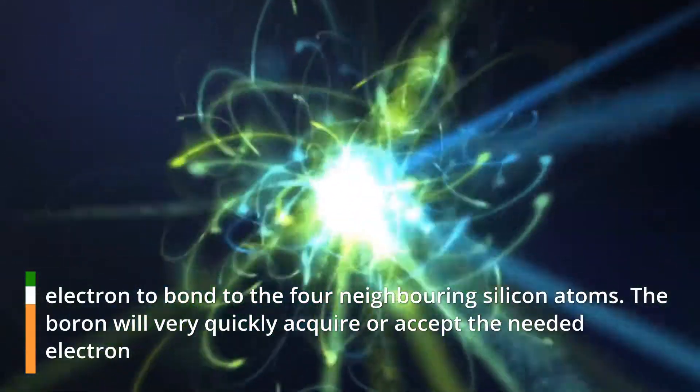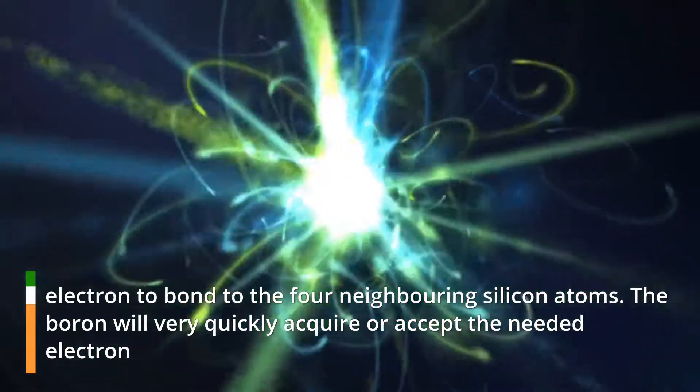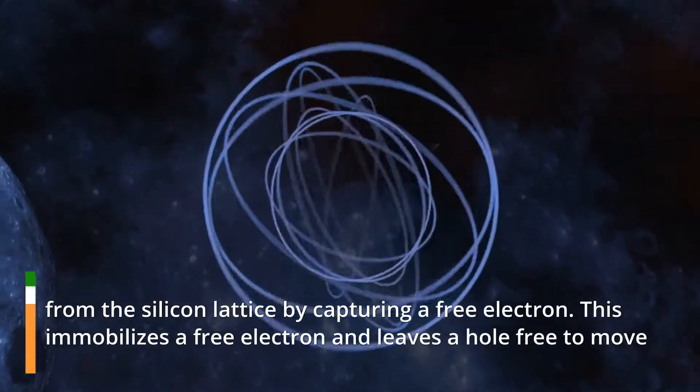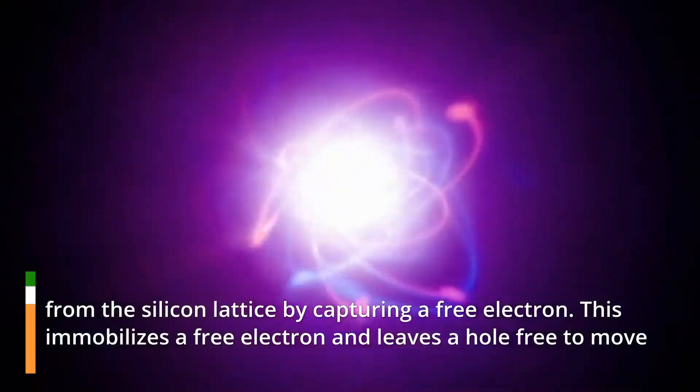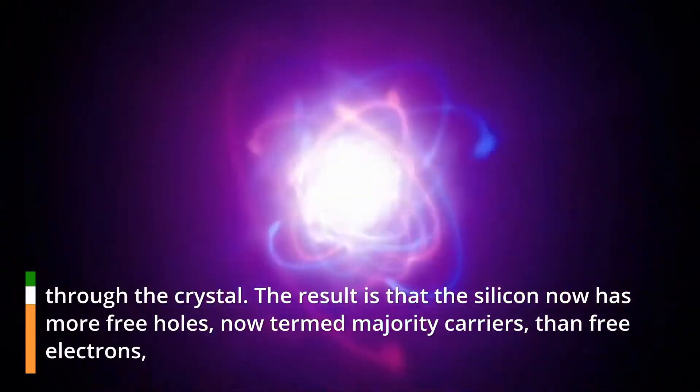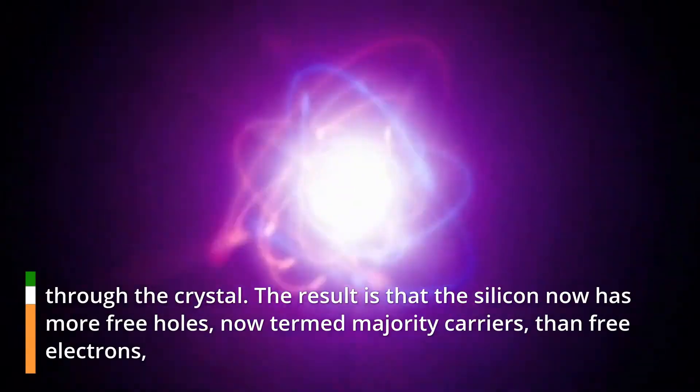The boron will very quickly acquire or accept the needed electron from the silicon lattice by capturing a free electron. This immobilizes a free electron and leaves a hole free to move through the crystal. The result is that the silicon now has more free holes, now termed majority carriers, than free electrons, now termed minority carriers.